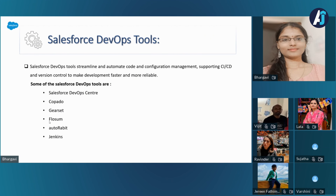Jenkins is an open-source automation tool used for CI/CD in projects. Out of these tools, Salesforce DevOps Center, Copado, and Flosum are native DevOps tools that reside inside Salesforce.